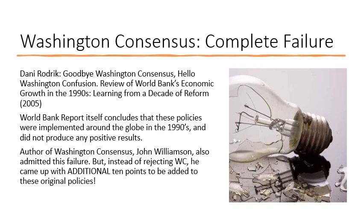But instead of rejecting these policies and saying they are wrong and we should do something else, he came up with an additional 10 points — that okay, these 10 points did not work, we need to actually have 20 points in order to make it work. And obviously, another 10 years later, we are going to need 30 points because these are not going to work either. Unfortunately, all around the globe, serious economists are thinking about and implementing these policies as the remedy for our poverty and as the means for growth.